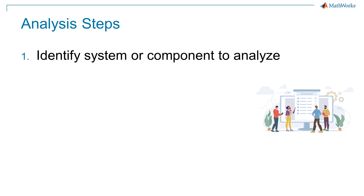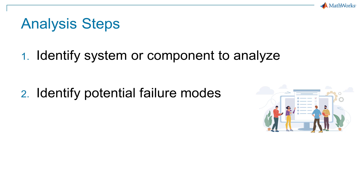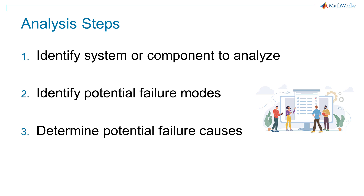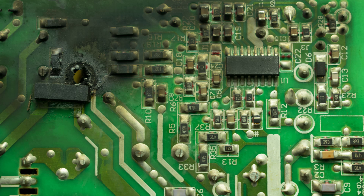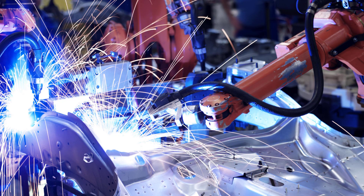Step 1: identify the system or component to analyze. Step 2: identify potential failure modes — for each component or process step, identify all the ways it could malfunction. Step 3: determine failure causes. For each failure mode, identify the potential causes. For example, a failure mode may be due to a system anomaly such as a fault, design flaws, material weaknesses, process shortcomings, or external factors.